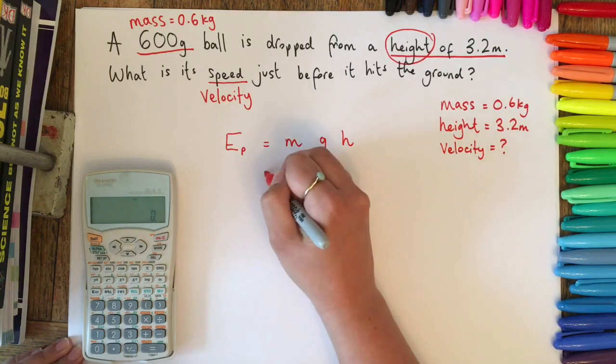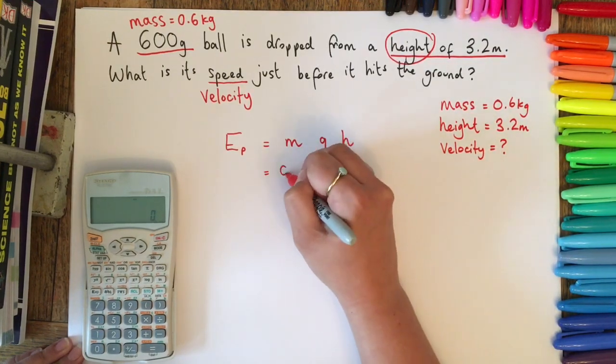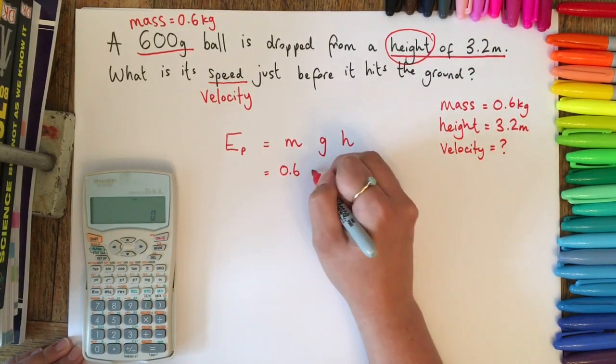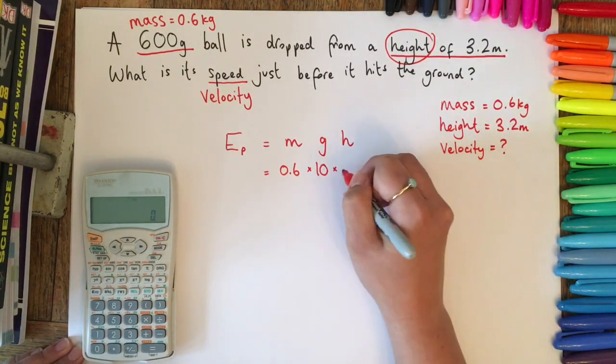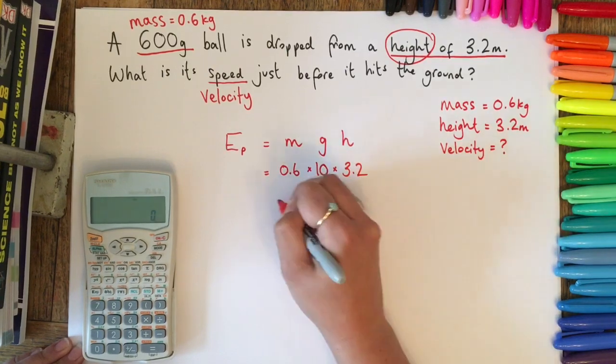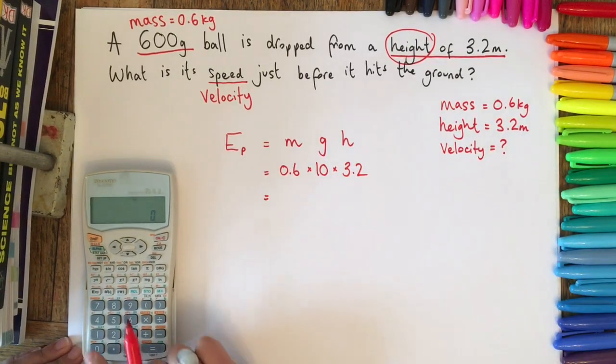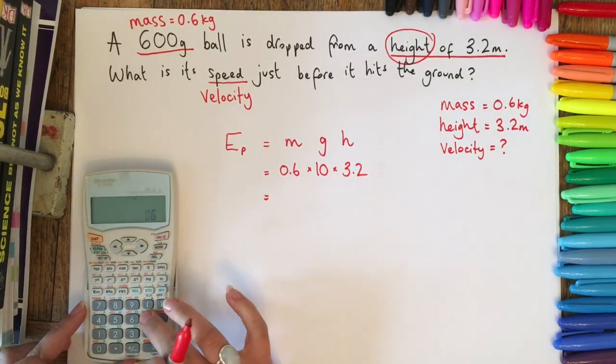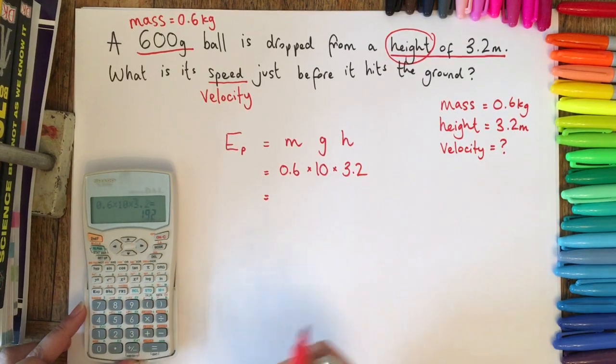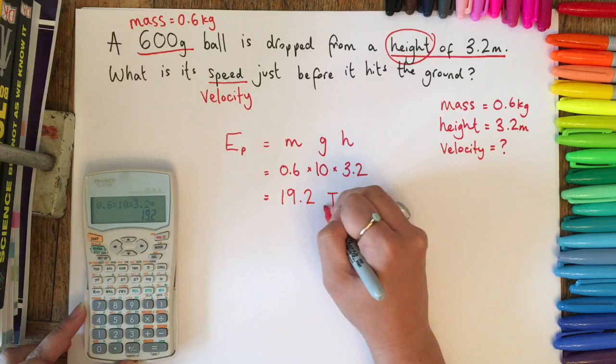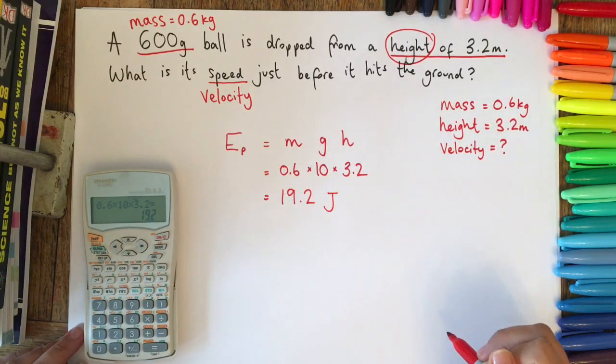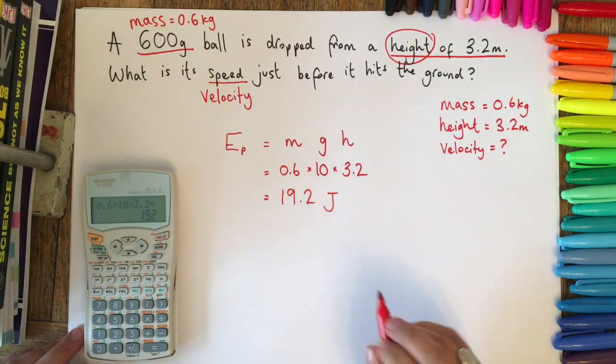We can do that by 0.6, which is our mass, times g, which at GCSE we say is 10, and the height which is 3.2. If we work this out, 0.6 times 10 times 3.2, we get an answer of 19.2 joules because it is potential energy.